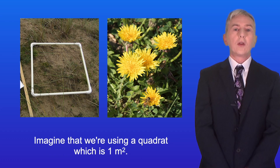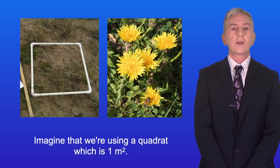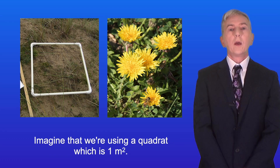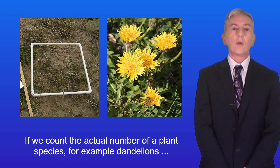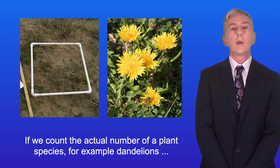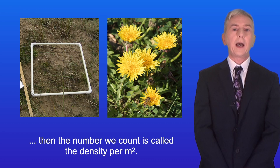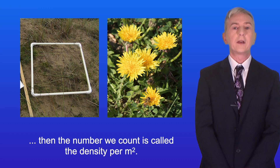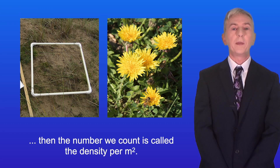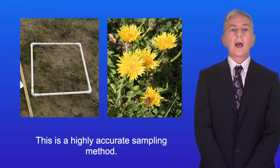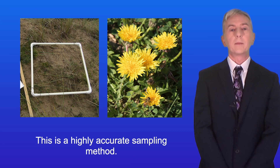Imagine that we're using a quadrat which is one meter squared. If we count the actual number of a plant species, for example dandelions, then the number we count is called the density per meter squared. This is a highly accurate sampling method.